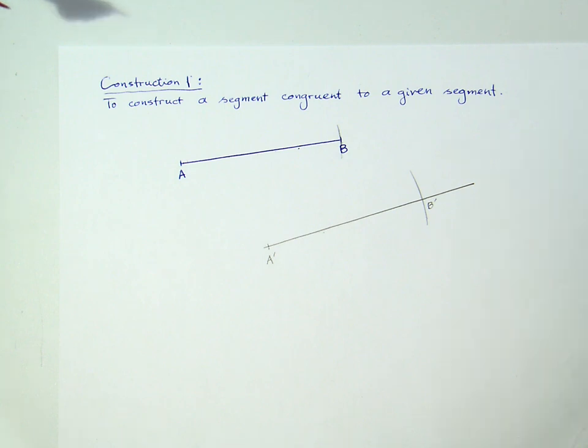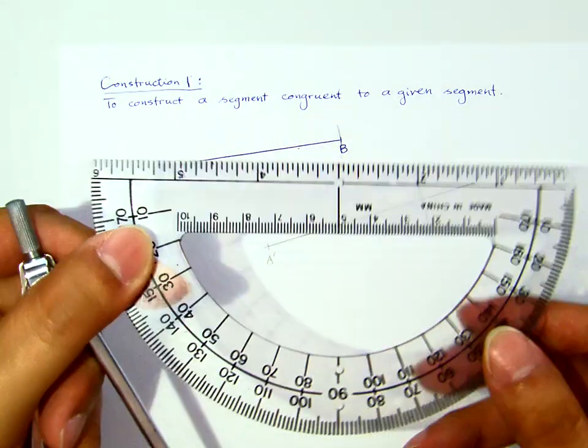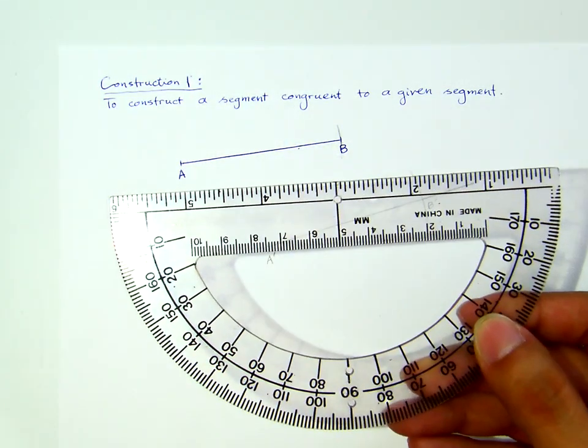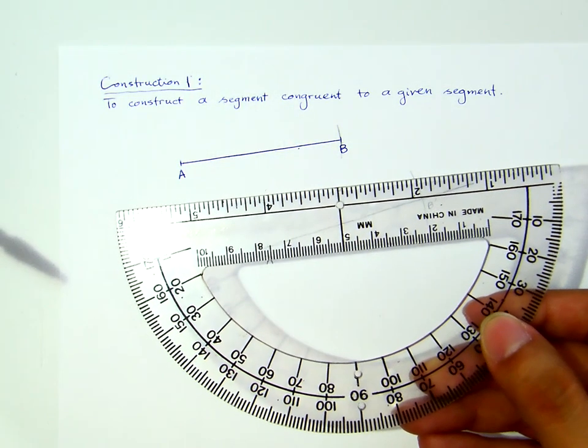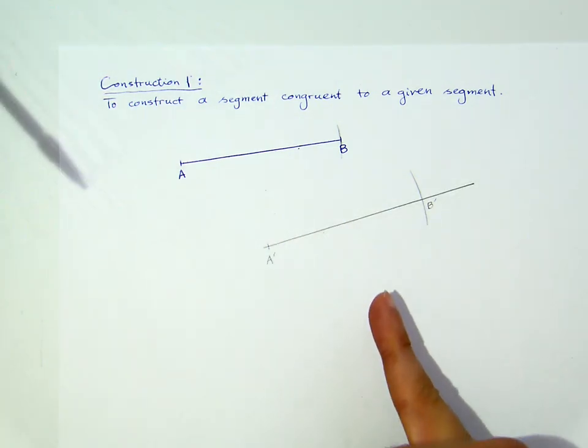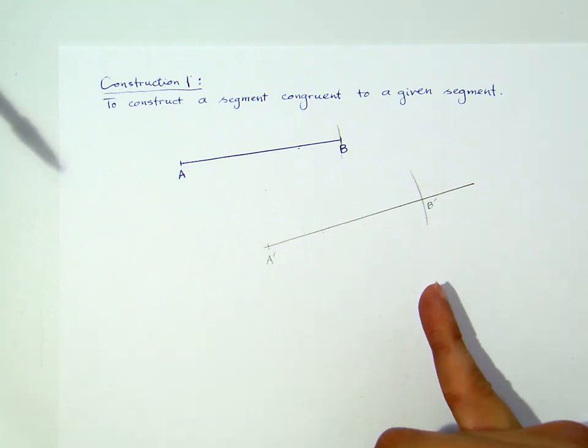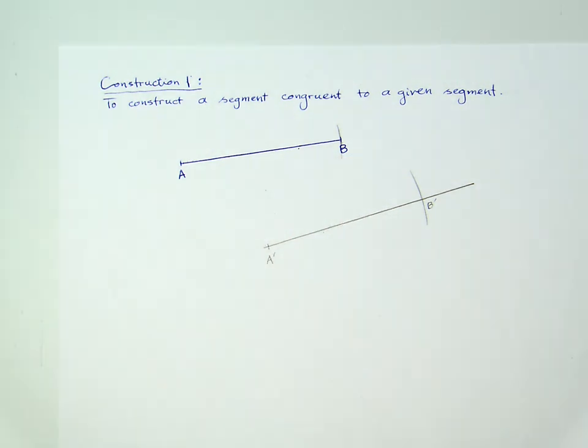In fact, I use just the straight edge here, even though I have the measurement there. But I use the straight edge and the compass to construct this segment A'B', which is congruent to the given segment AB.